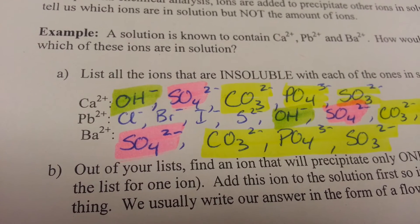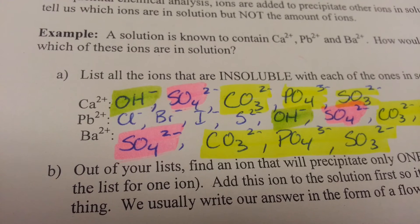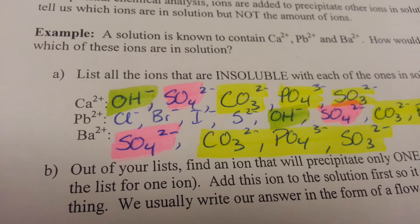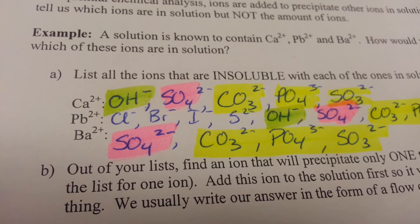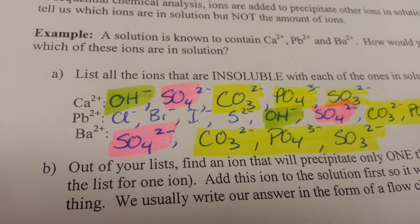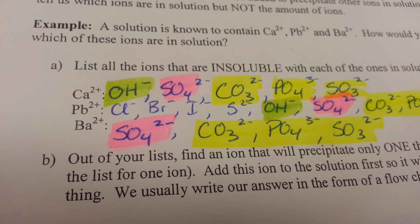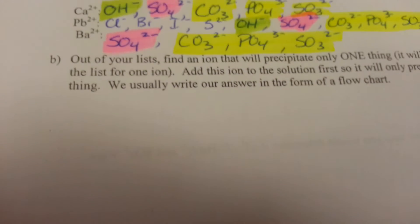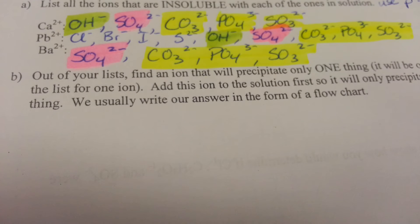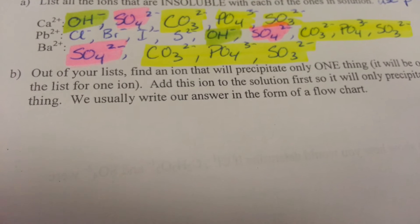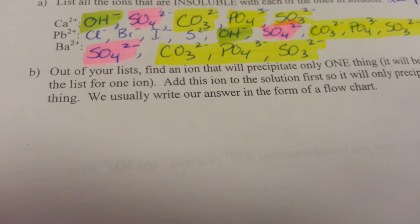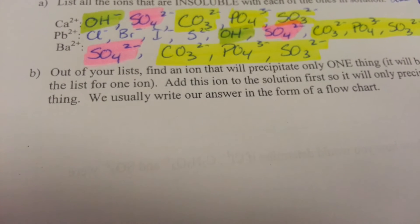We're going to identify whether or not lead is going to be present in a solution. We're going to try to identify this first because it has characteristics where it will create precipitate with chlorine, bromine, iodide, or sulfide. So starting our flow chart, we're going to try to utilize one of those four ions that will create a precipitate with lead. I will try to use safe substances and substances that typically are going to be common.